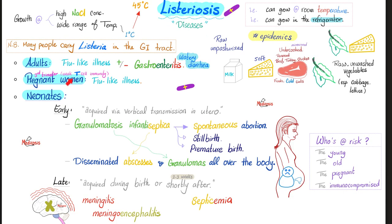These are the diseases caused by Listeria. We have flu-like illness and gastroenteritis. We have granulomatosis infantiseptica. We have disseminated abscesses and disseminated granulomas. We have meningitis or meningoencephalitis, and septicemia.